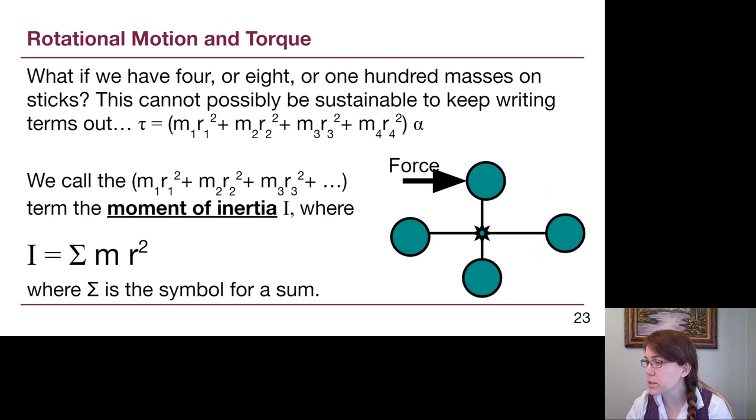If we had four sticks rotating, like the picture here, or 8, or 16, or a million, we would still be able to add up every single one of those terms. That hopefully seems a little bit unrealistic and unsustainable, and it is. Instead what we're going to do is instead of just adding up every single small mass and just writing it out forever and ever, we're going to define this new idea of moment of inertia, where the moment of inertia uses the capital letter I for inertia, and it is equal to the sum of all of the m r squared terms.